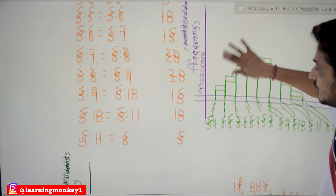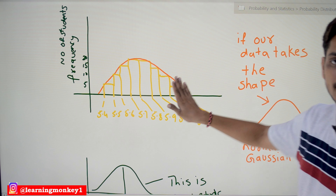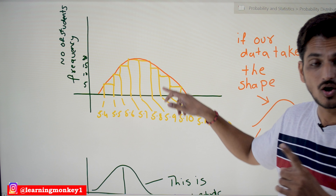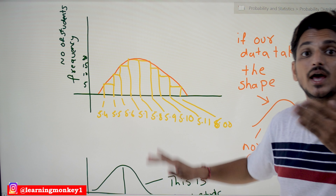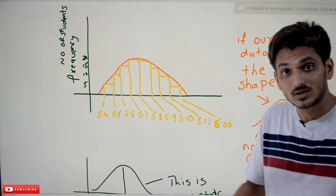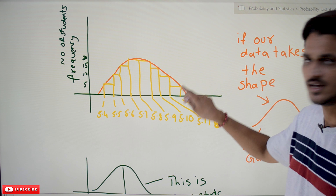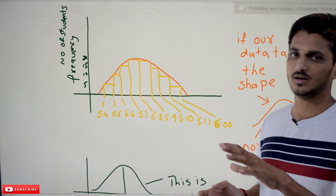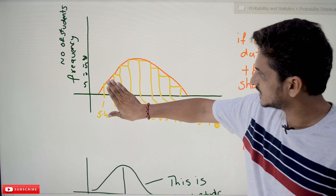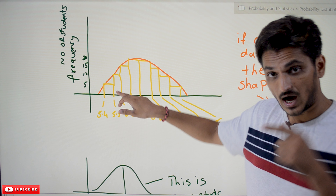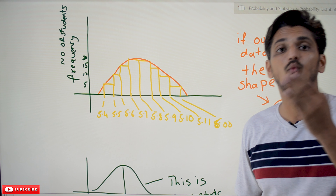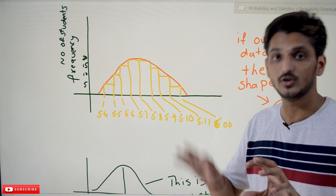If your data is distributed like this and you take a function which satisfies this shape, then we can apply normal distribution. Normal distribution has a function which satisfies this shape — that orange line is that function. From the last class, the area under the probability density function must equal 1. The area under this normal distribution function should also equal 1, and yes it does. What that function is, we will discuss in our next class.